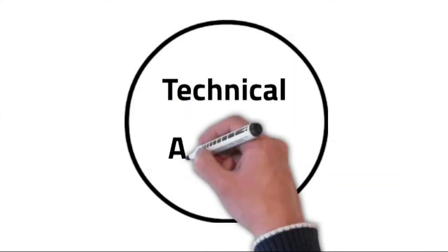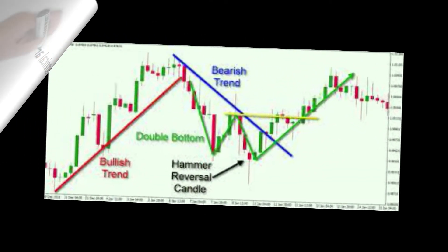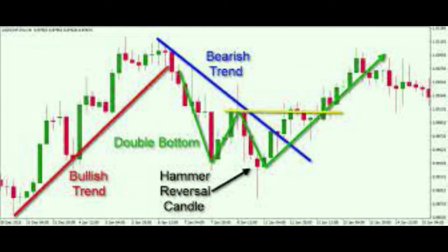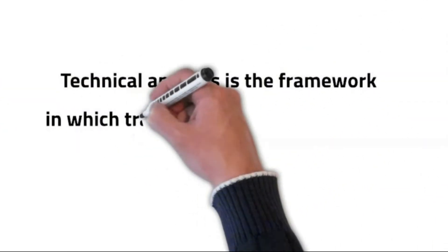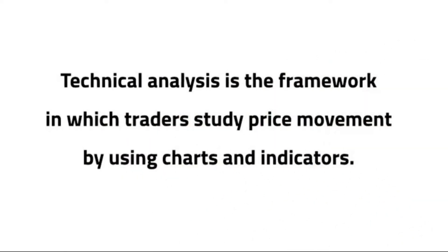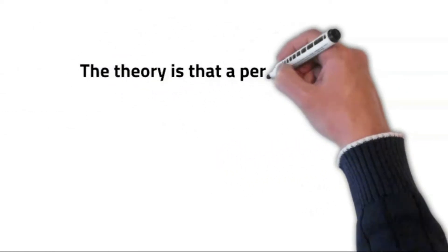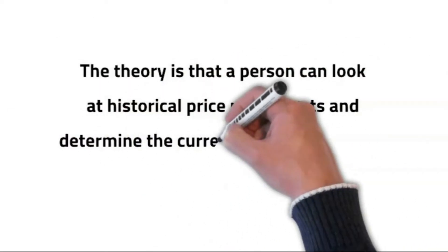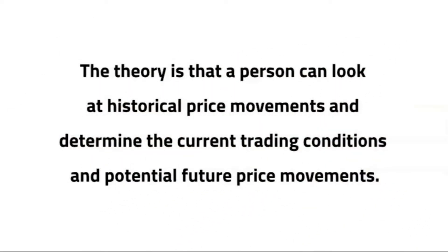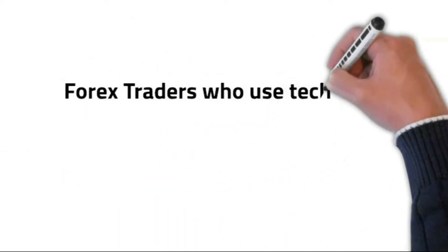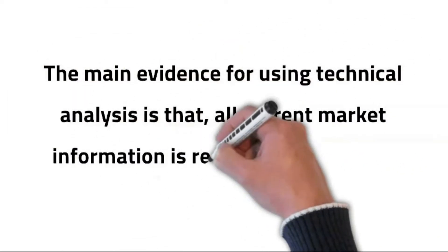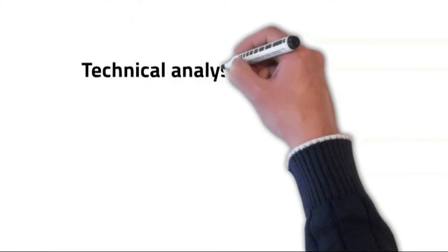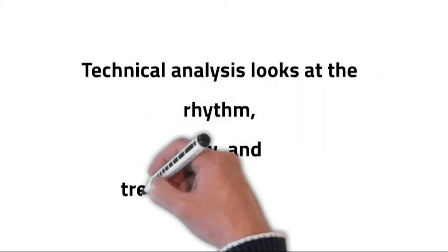So let's start with: what is technical analysis? Technical analysis is the framework in which traders study price movement by using charts and indicators. The theory is that a person can look at historical price movements and determine the current trading conditions and potential future price movements. Forex traders who use technical analysis are known as technical traders. The main evidence for using technical analysis is that, theoretically, all current market information is reflected in the price. Technical analysis looks at the rhythm, flow, and trends in price action.